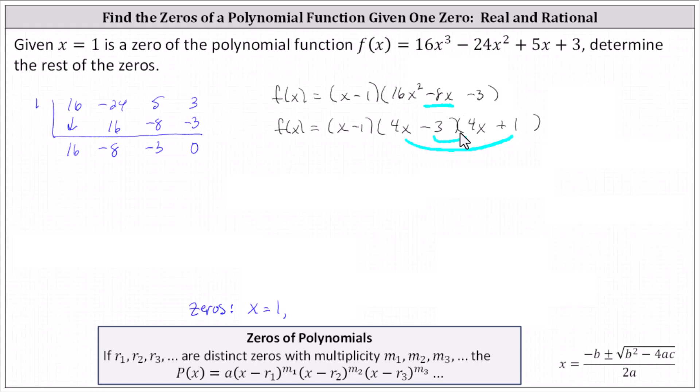The inner product is negative 12x. The outer product is four x. And notice the sum is negative 8x, verifying the factors are correct.